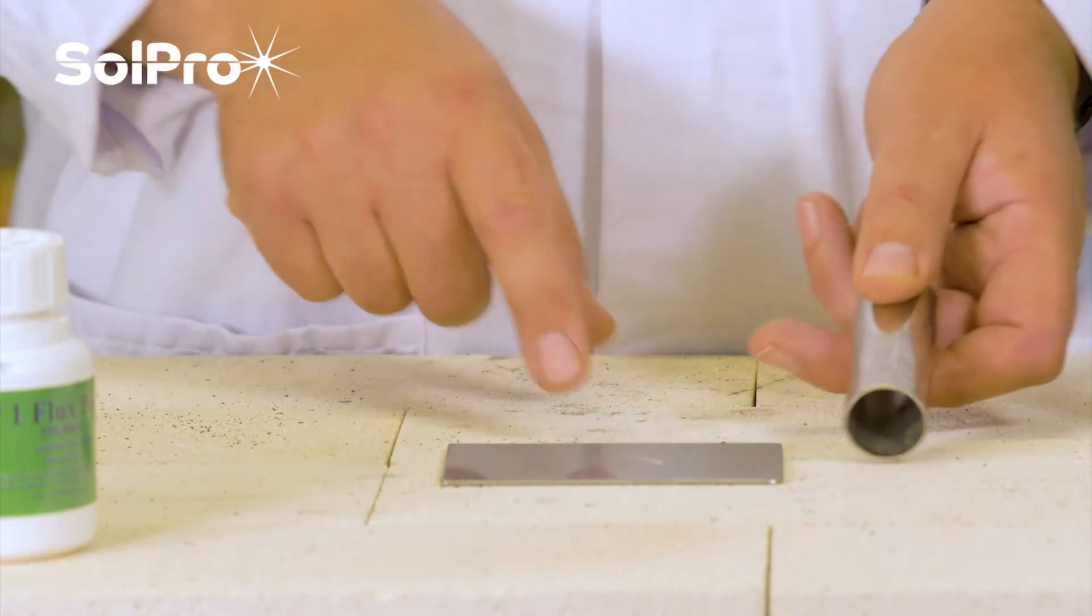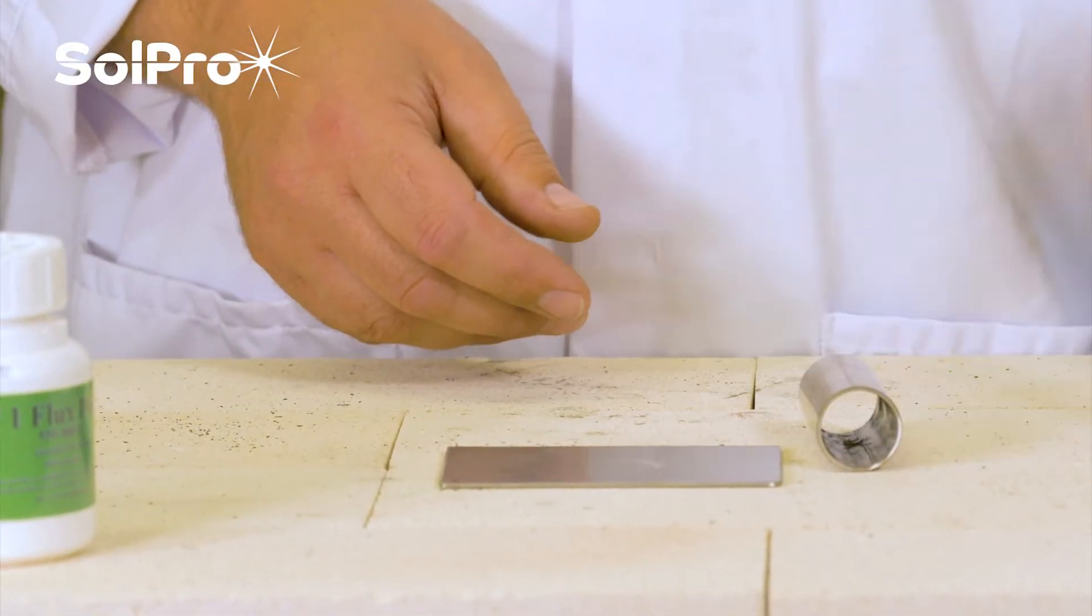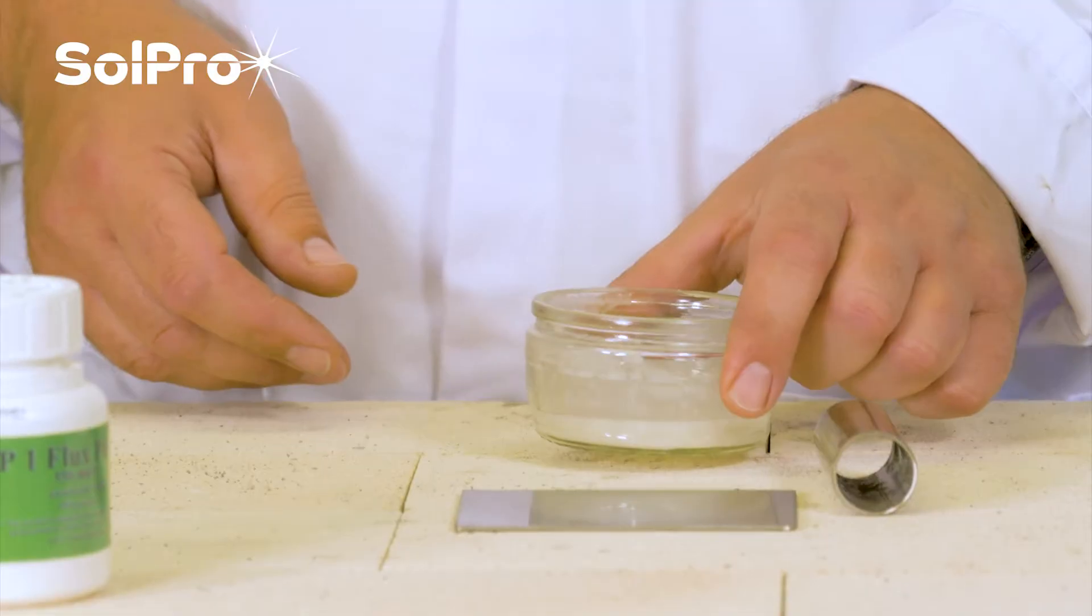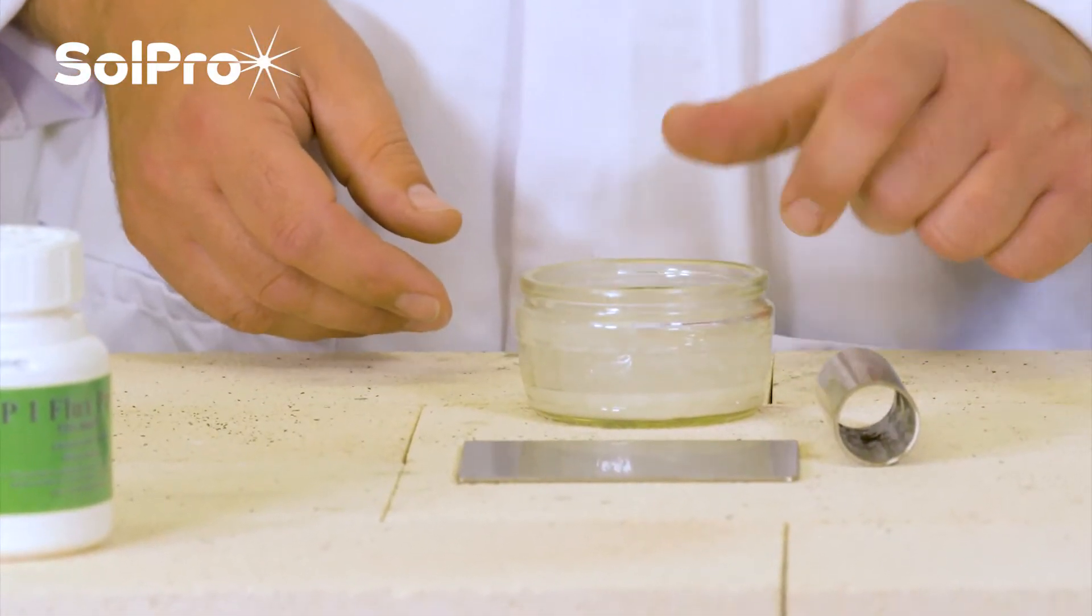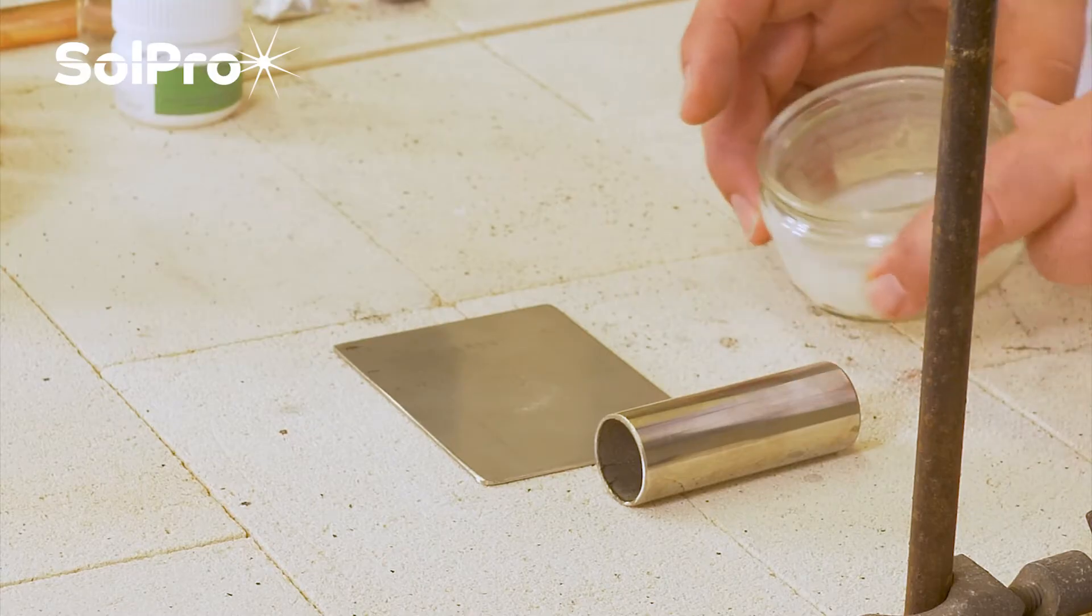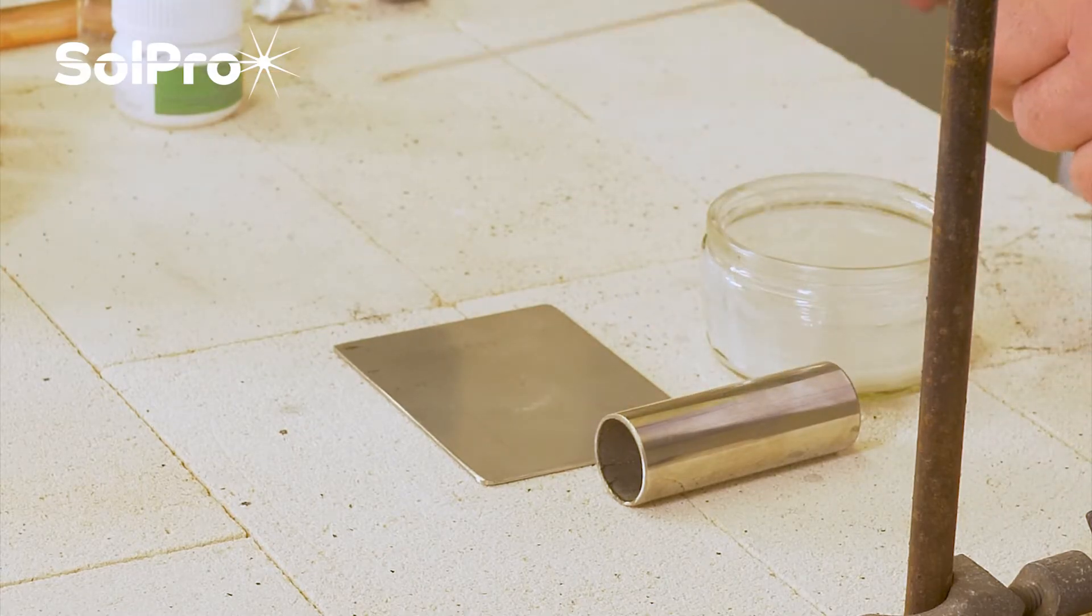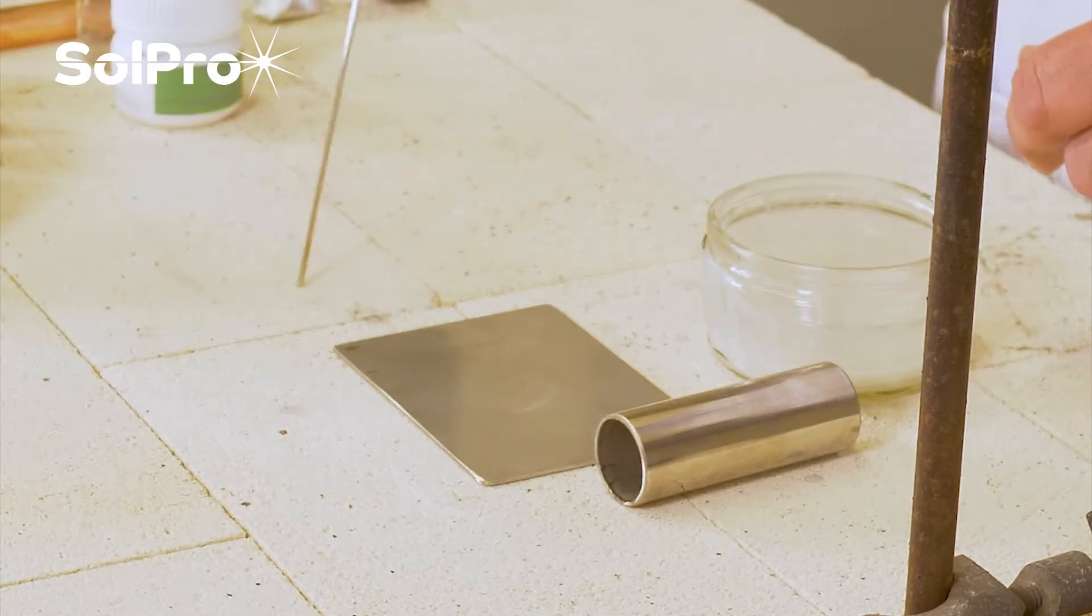What we're going to do here is join a piece of stainless tube to a piece of stainless plate. To do this we're going to use our SP1 flux paste that we've demonstrated in another video on how to make it up into a nice creamy paste, and we're going to use our Silver Braze 55T brazing rod.